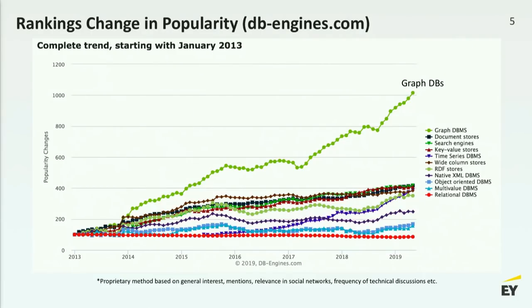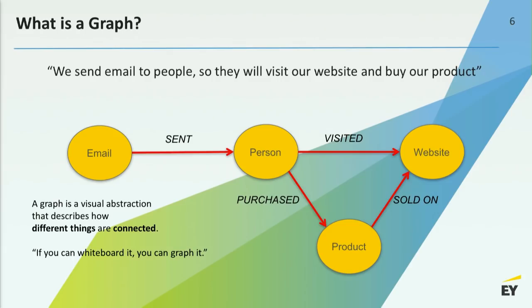Graphs are still taking off in terms of popularity among developers. For those brand new to graphs: a graph is a visual representation of how data is connected. I'm going to be talking a lot about the labeled property graph model, which is Neo4j's model. I think it's actually very easy for people who have thought about SQL for a long time to get their heads around — a graph simply shows how data is related.